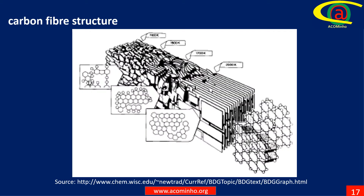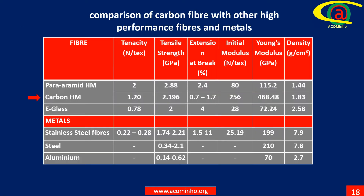Upon prolonged heating at higher temperatures, above 1300 degrees centigrade, carbon fibers will eventually become pure graphite. This table shows a comparison of carbon fiber with other high performance fibers and metals. Learn more in Unit 3, Part 2.